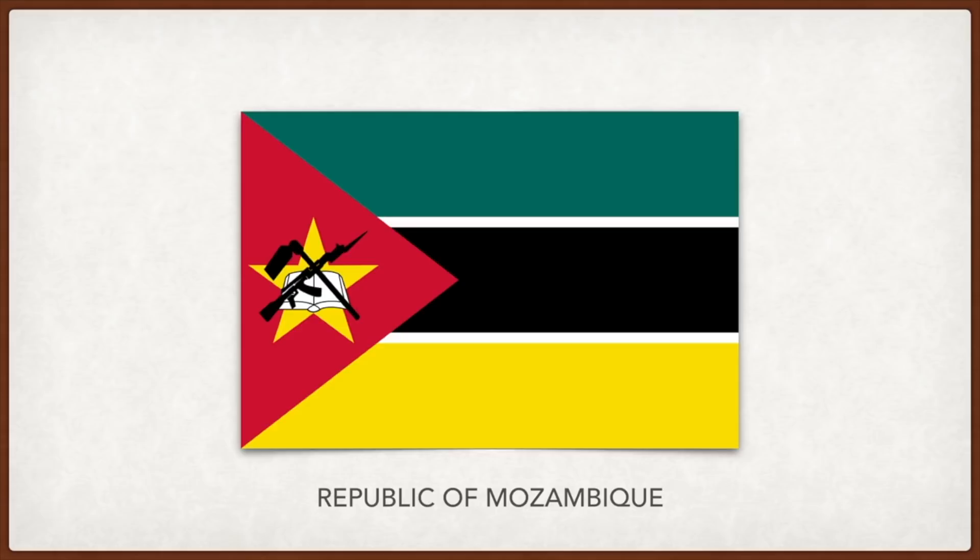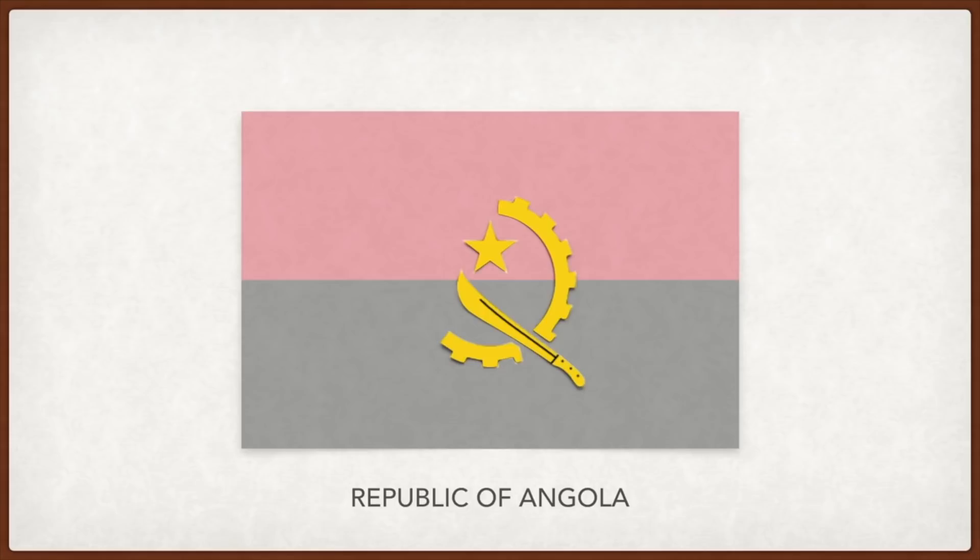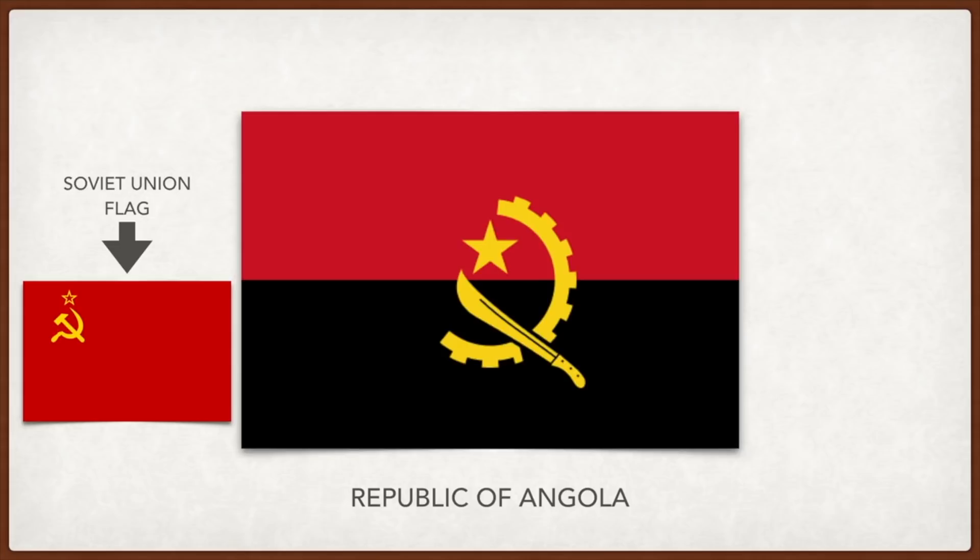Angola: red is for the blood spilled for independence, black is for Africa. The half gear in the middle represents workers and industry, the machete represents agriculture and armed struggle, the star represents Marxism, and the whole flag was supposed to evoke the hammer and sickle of the Soviet Union flag.